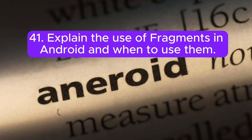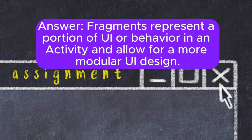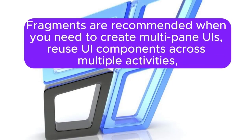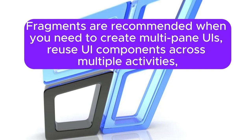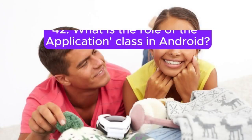Question 41: Explain the use of fragments in Android and when to use them. Fragments represent a portion of UI or behavior in an activity and allow for more modular UI design. They are used to create reusable UI components and support flexible layouts especially for larger screens like tablets. Fragments are recommended when you need to create multi-pane UIs, reuse UI components across multiple activities, or create dynamic and flexible UIs that adapt to different screen sizes and orientations.